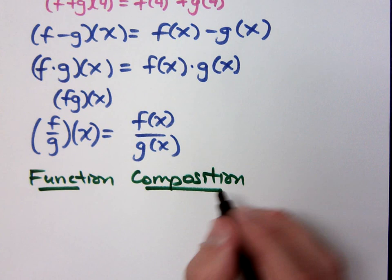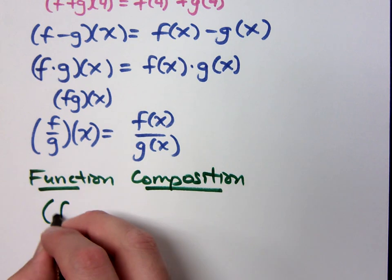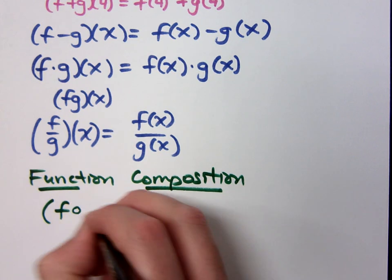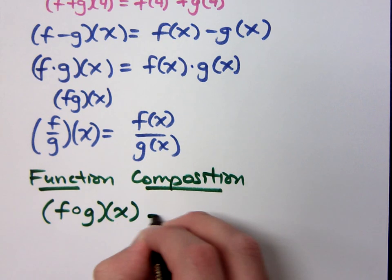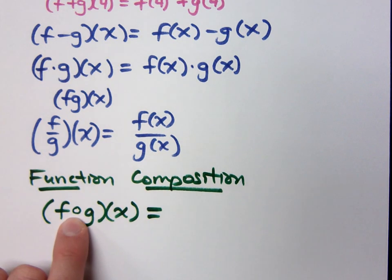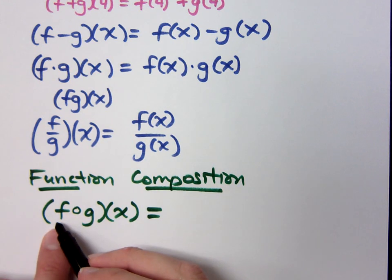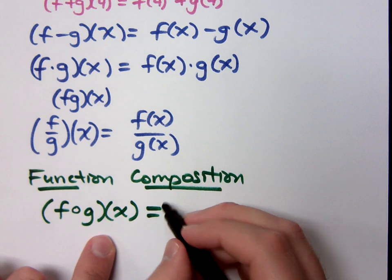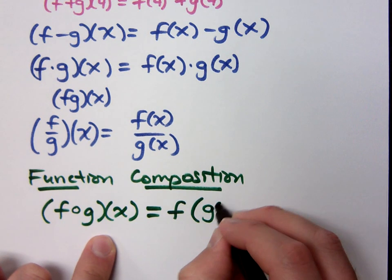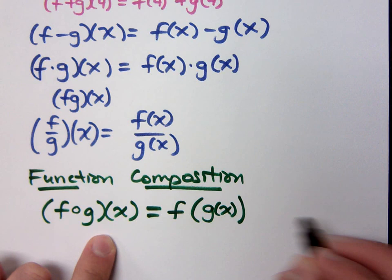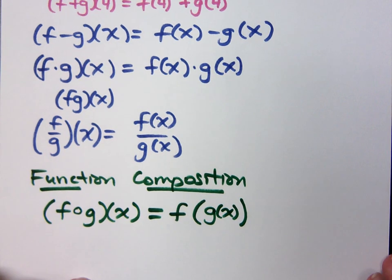This is the notation that you will see. Please understand, this is not a dot, but this is actually an open circle. This is talking about the function f composed with g. And what it means is that you've got f, and what you're doing is that you are plugging g of x into it.